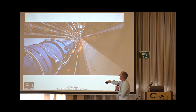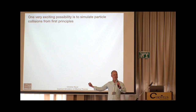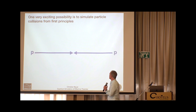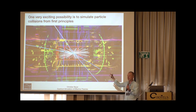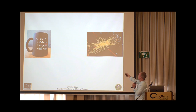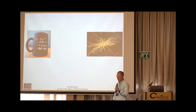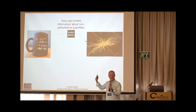Inside these machines we accelerate protons that then collide. Two protons collide and something comes out that we record in our detectors. When we want to test the standard model, we ask: is whatever comes out of these particle collisions consistent with the standard model? We've gotten very good at using classical computers to make these predictions.